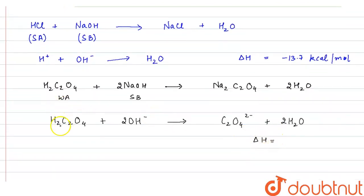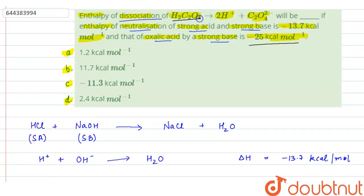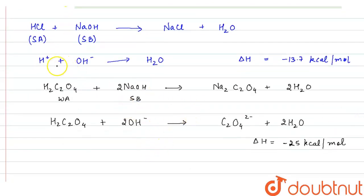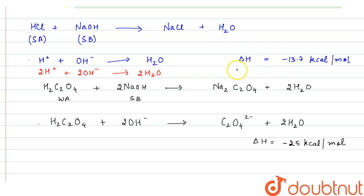We need to find the enthalpy of dissociation when H2C2O4 gives 2H⁺ plus C2O4²⁻. We will obtain that reaction using the two given reactions. If we multiply the neutralization equation for strong acid and strong base by 2, we get: 2H⁺ plus 2 OH⁻ gives 2 H2O. The enthalpy change also multiplies by 2, giving minus 2 × 13.7 KCal per mole.